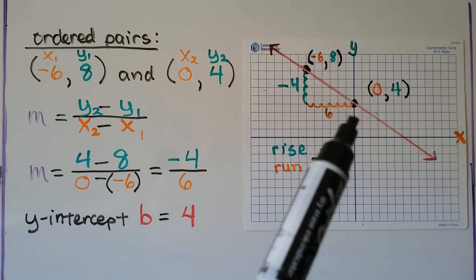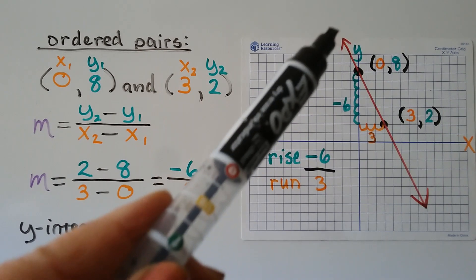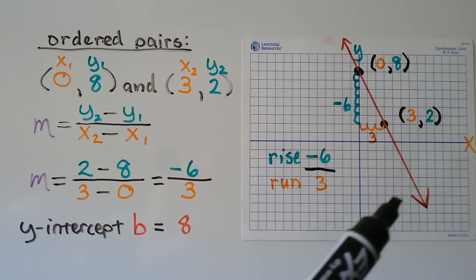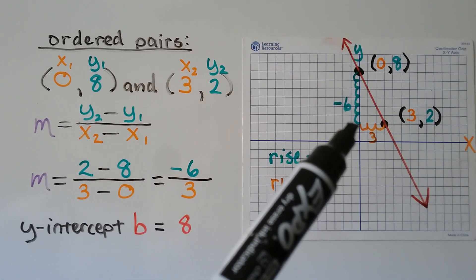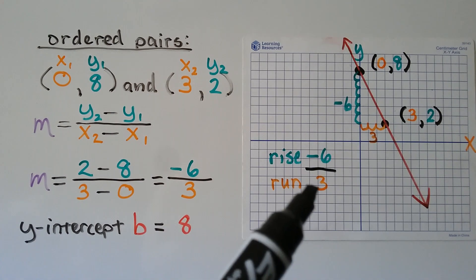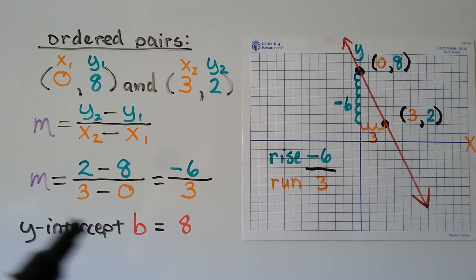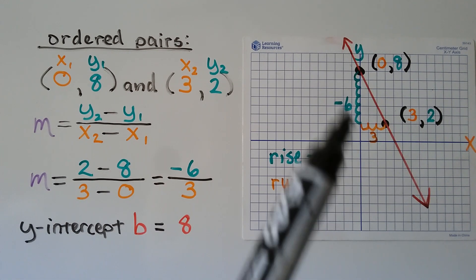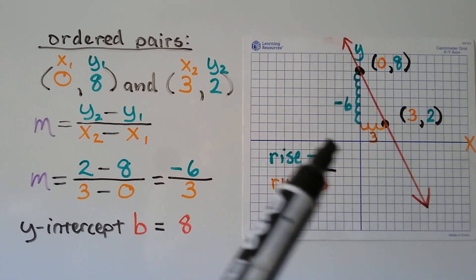Our y-intercept b is 4 — that's where it crosses the y-axis, where x equals 0. So we could do this using the slope formula, or we could do it just by looking at it and counting the rise and the run and seeing if the graph is falling to the right or rising to the right. For this next one, the graph is falling to the right, so we know it's going to be a negative slope. It comes down 6, so we have negative 6, and our run going across is 3, giving us negative 6 over 3. Using the slope formula, we do 2 minus 8 over 3 minus 0 — that gives us negative 6 over 3, just like we got by counting. The y-intercept b is 8, where x equals 0.